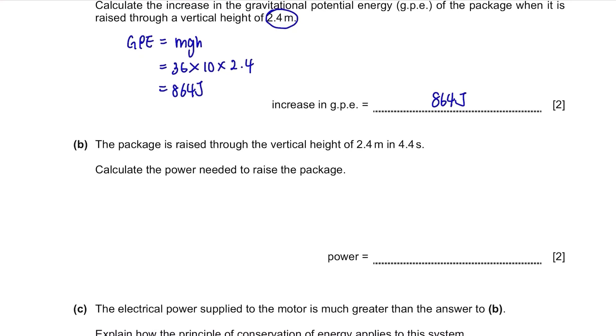Part B. The package is raised through the vertical height of 2.4m in 4.4 seconds. Calculate the power needed to raise the package. Same amount of energy would have been used since it's raised to the same height as part A and we know the time taken. The formula of power is energy divided by time. So it's 864J divided by 4.4 seconds and the answer is 196W.